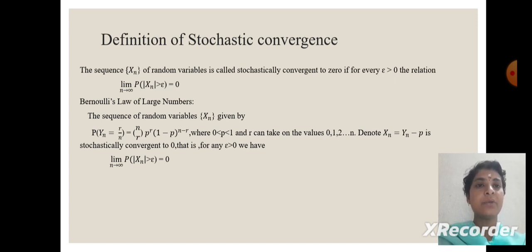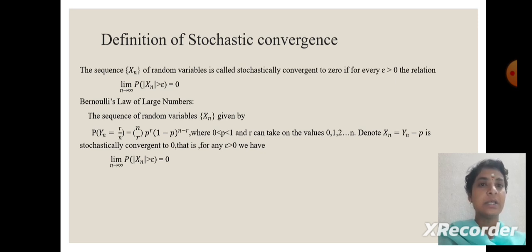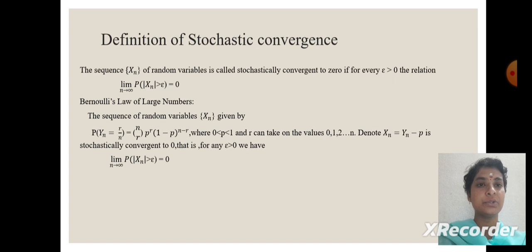Definition of stochastic convergence: the sequence x of n of random variables is called stochastically convergent to 0 if for every epsilon greater than 0, the relation limit n tends to infinity of probability of absolute value of x of n greater than epsilon equal to 0 holds.